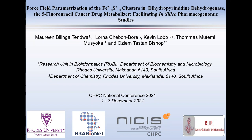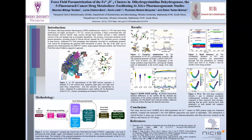Our investigation was based on generating new phosphate parameters for ion centers in the dihydropyrimidine dehydrogenase protein. DPD protein is a protein that metabolizes 5-FU, which is 5-fluorouracil, a cancer drug.